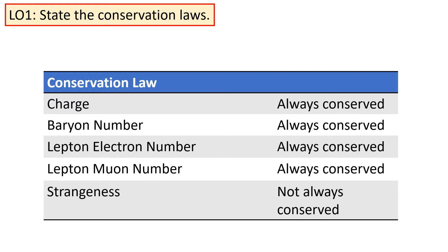At A level there are several new conservation laws that you need to know: charge, baryon number, lepton electron number, lepton muon number, and strangeness. The first four of these are absolute — they are always conserved. However, strangeness will only apply in certain circumstances, which we'll cover towards the end of today's lesson.